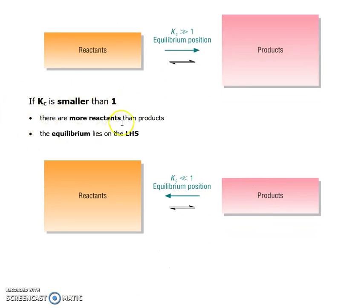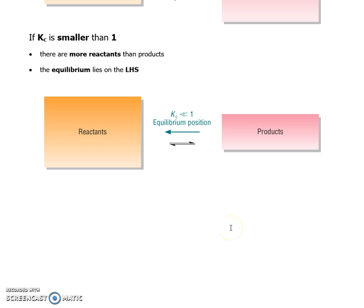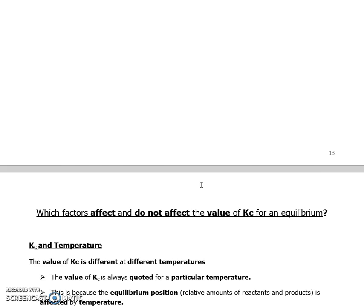If Kc is less than one, then it means you've still got more reactants than products. So again, so imagine if you've got a concentration of two mol per decimeter cubed for your reactant, one mol per decimeter cubed for your products. Well, that means your Kc expression would be a half.